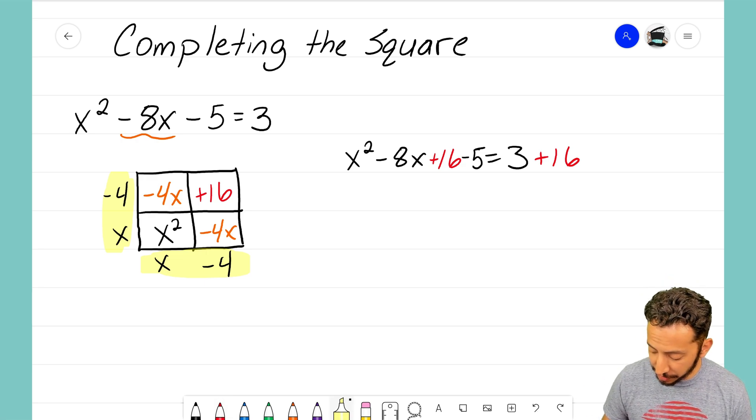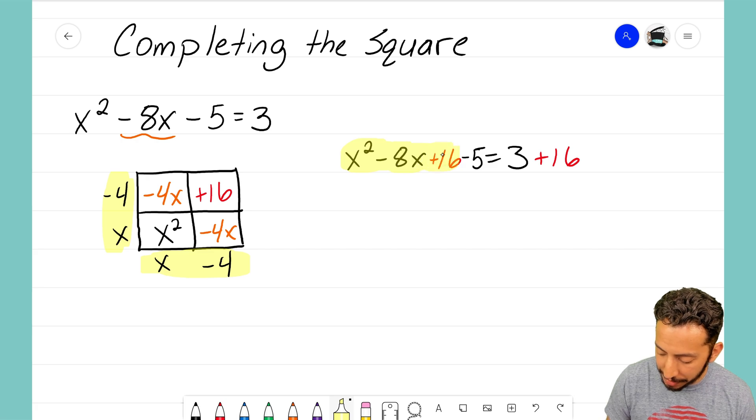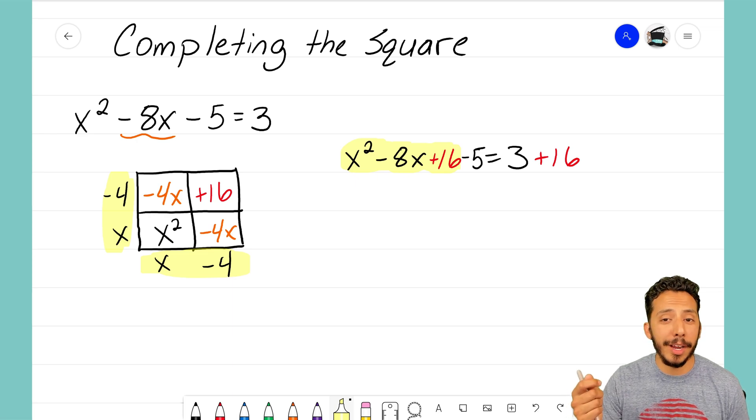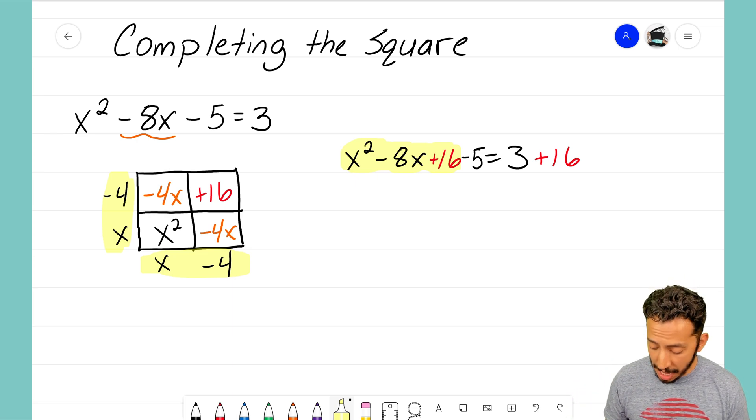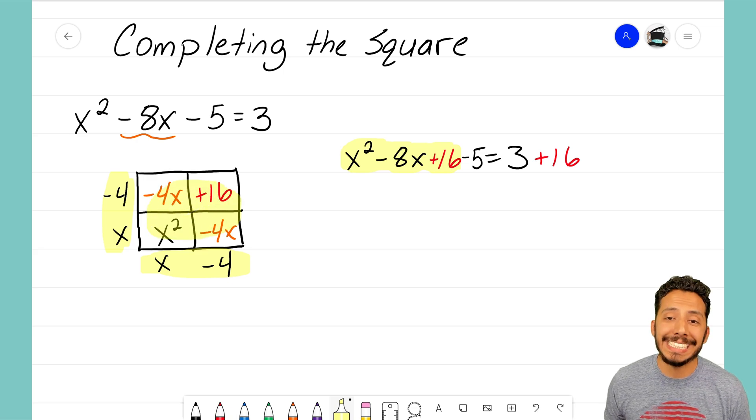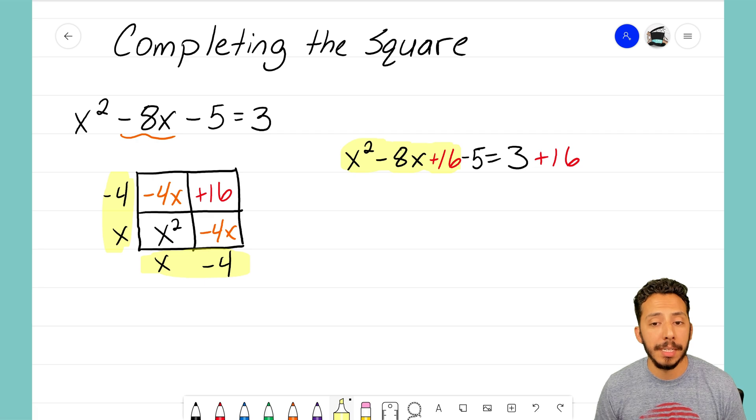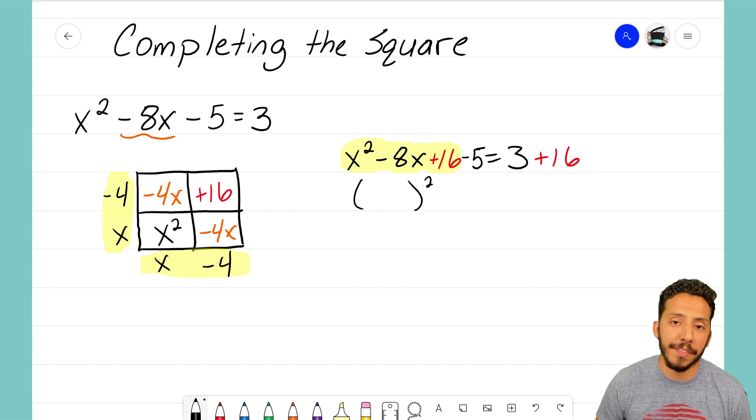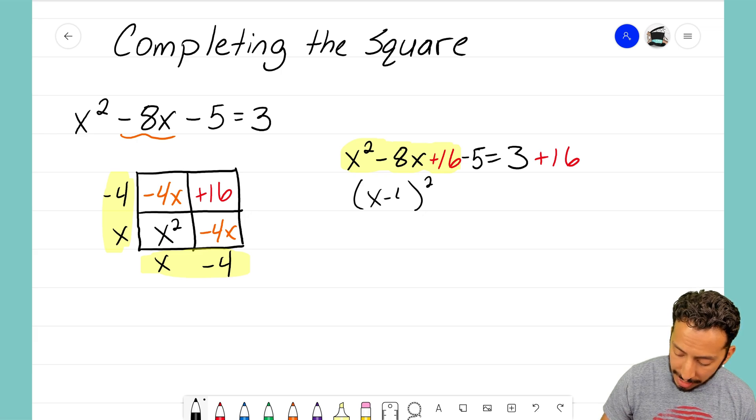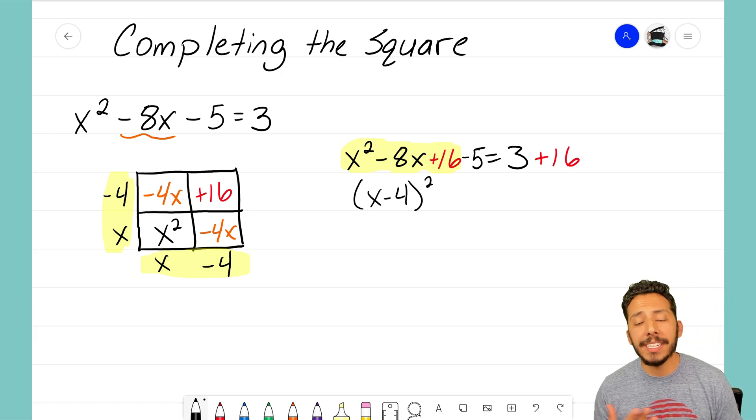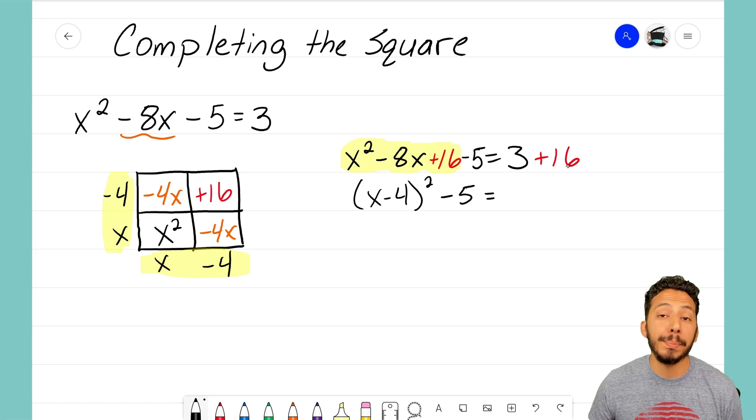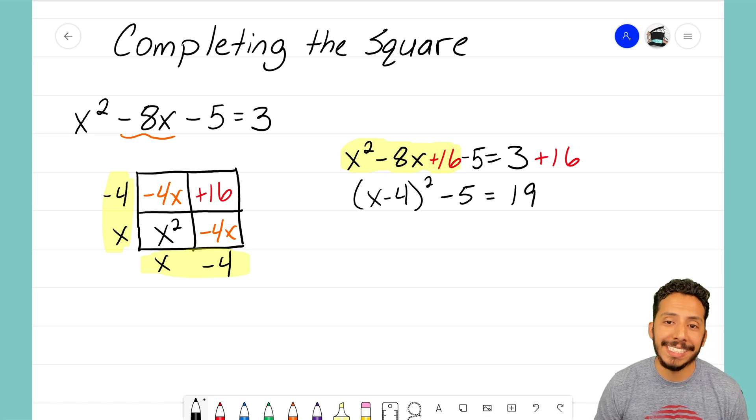Now again just like with the previous video where I introduced the completing the square method, I'm going to focus in on that highlighted equation because that highlighted equation, x squared minus 8x plus 16, that is our generic rectangle here. That's the inside pieces, that's the sum. I want to change that sum into the product and the product of that equation ends up being in the sides of this generic rectangle which are both x minus 4. So I have x minus 4 the quantity squared, I have the minus 5 at the end and it's still equal to 3 plus 16 which is going to make 19.